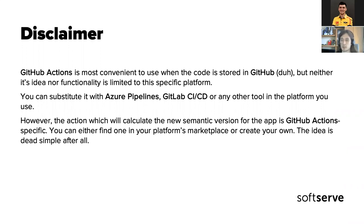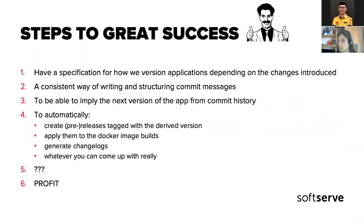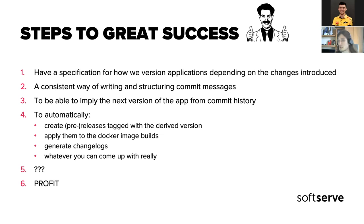If we look at the general problem we want to cover with all of these items — whether at the start of a project or a point where you'd like to tidy things up — we want something really easy, really quick, and sustainable enough to stay with your processes for a long time. The first item would be to have a specification for how we actually version applications, taking into account which changes we're introducing.